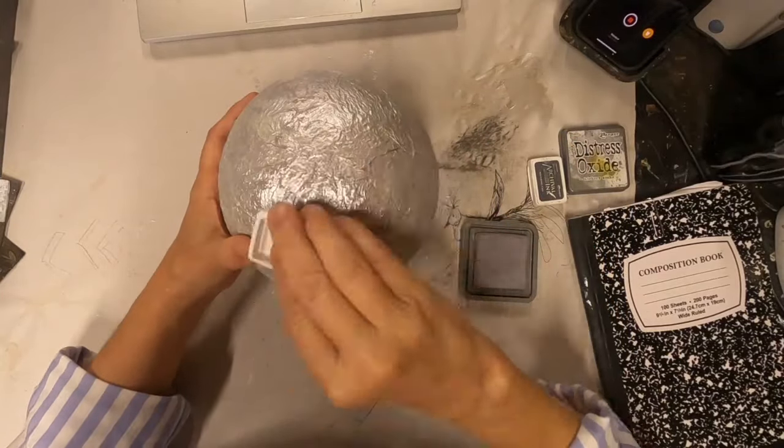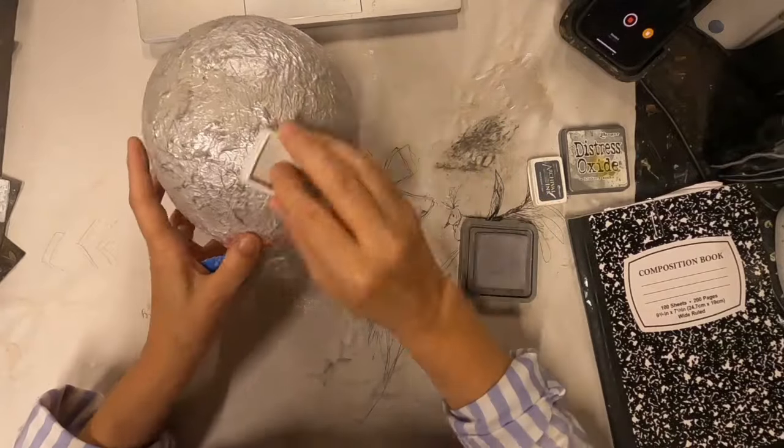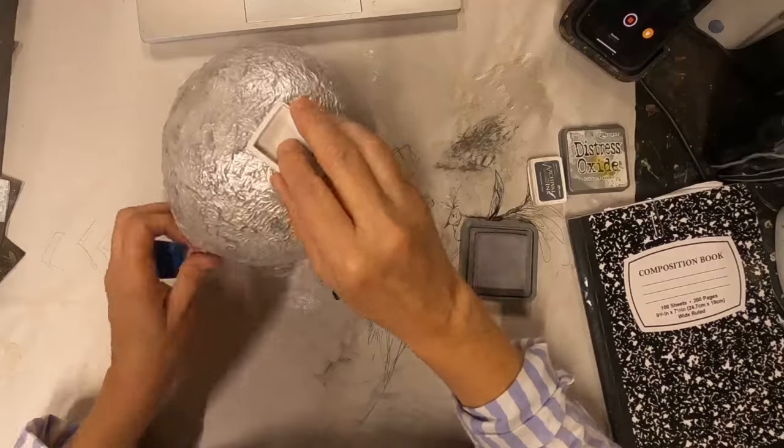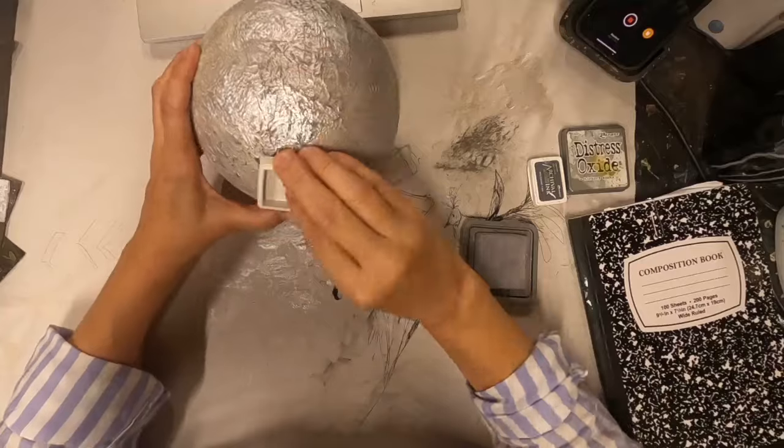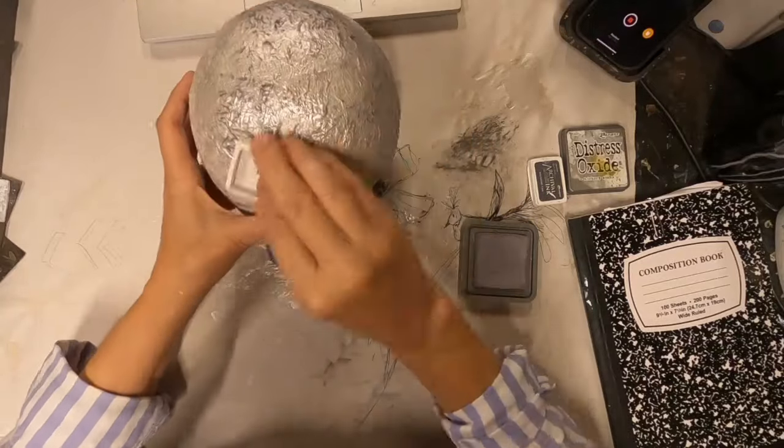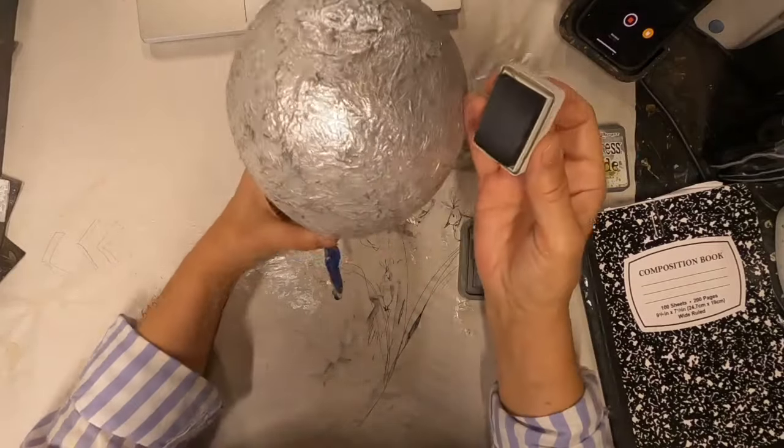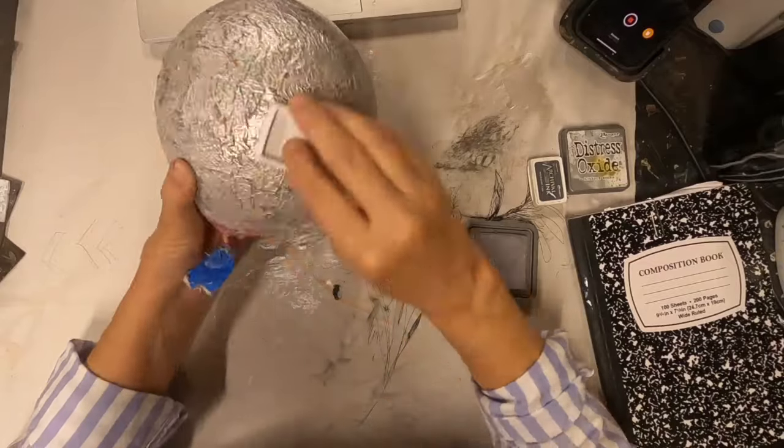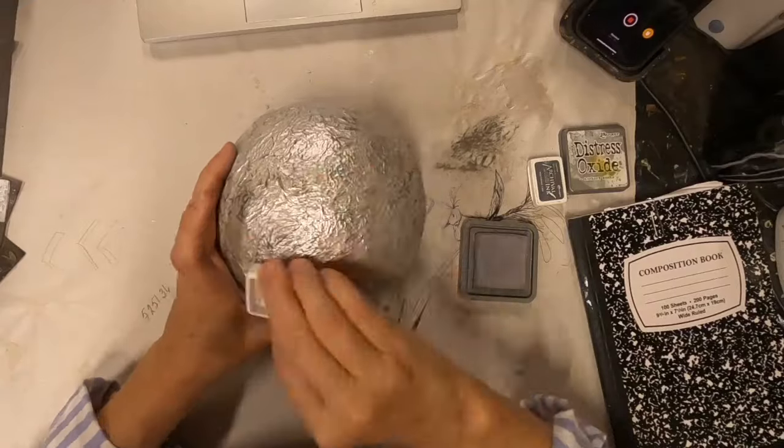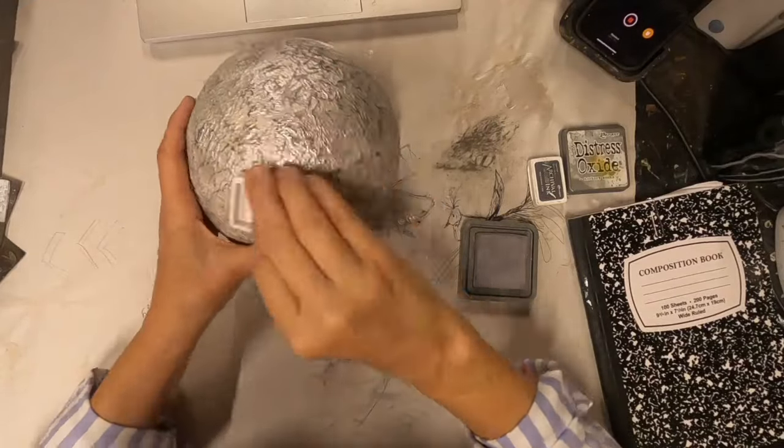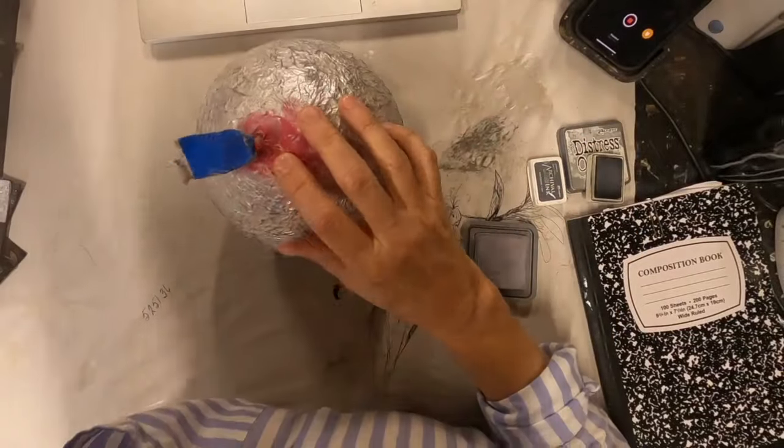That's very subdued. Now I have watering can, which is a deeper gray. I'm coming back over the texture with that watering can. You can see how it's picking up all of those, all of that texture in that tissue paper.